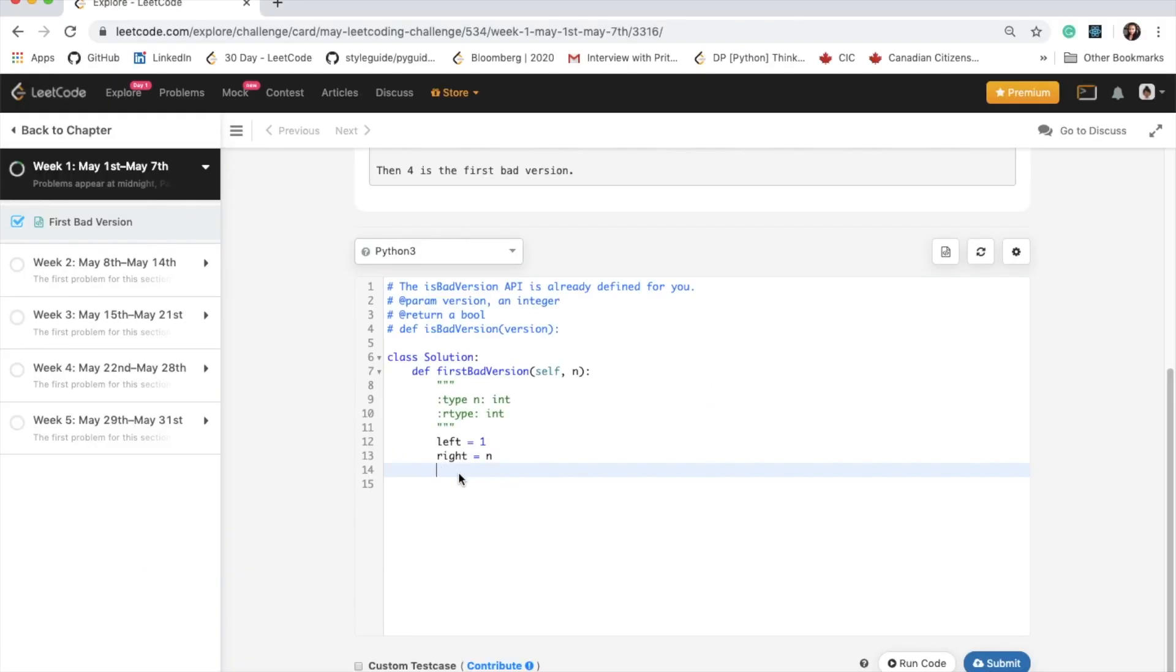Great, so I'm back in LeetCode. And what I've done here is I've initialized my left and right variables. So the left, we're going to start at one because that's what the question wants us to do. That's our first version. And the right will be the last element, the last index in the array, which is n.